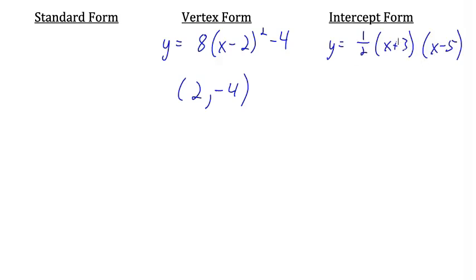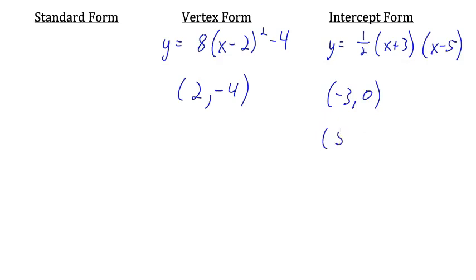This equation is written in intercept form, and it's called that because just by looking at this equation, we can easily tell that there are x-intercepts at negative 3, 0 and positive 5, 0. Also very handy when graphing this quadratic equation.